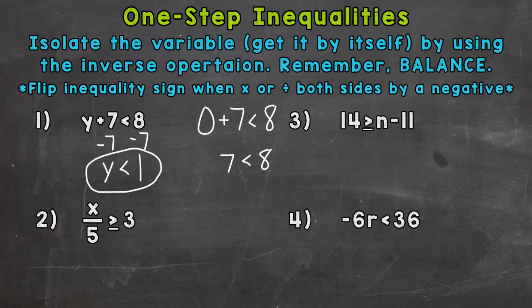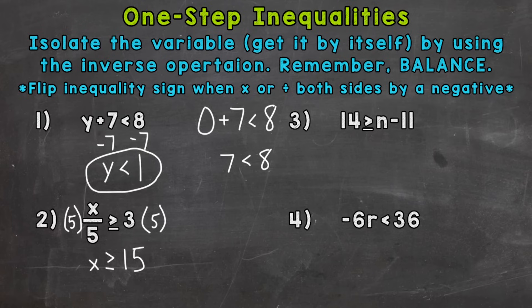On to number two, where we have x divided by five is greater than or equal to three. We're dividing by five, so the opposite would be multiplying by five. Let's multiply both sides by five. The fives on the left cancel out, isolating the x. We have x is greater than or equal to three times five, which is 15.